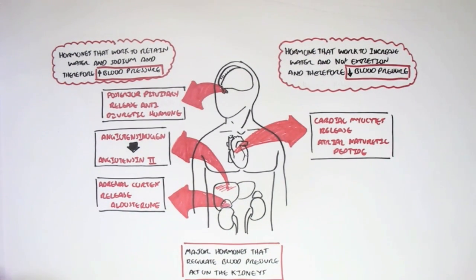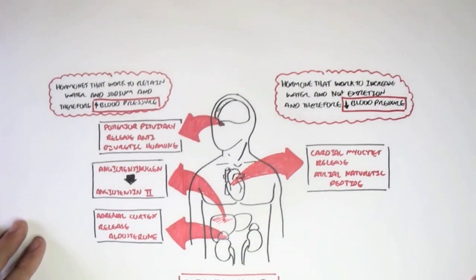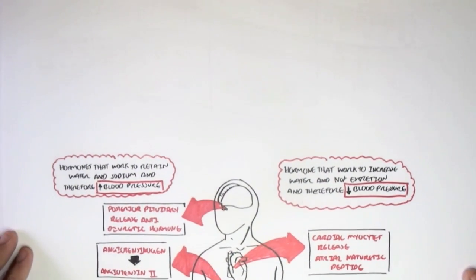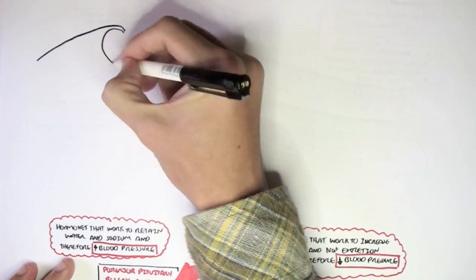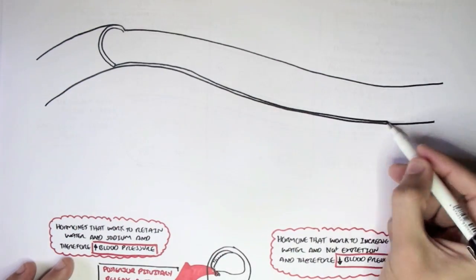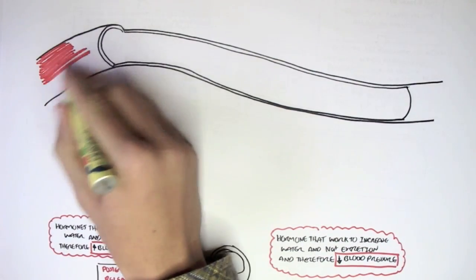Now, the question is: because these hormones affect the kidneys indirectly or directly to regulate blood pressure, how do the kidneys regulate blood pressure? And how do water and sodium influence blood pressure?